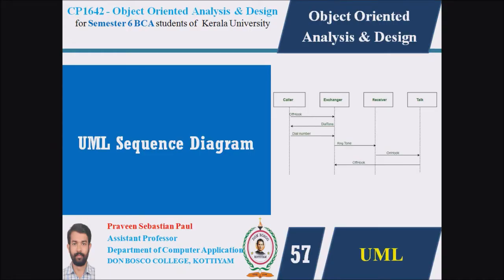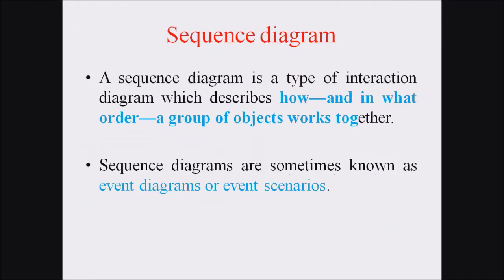Hi students, I am Praveen Sebastian Paul. In this lecture we are discussing the UML sequence diagram. A sequence diagram is a type of interaction diagram which describes how and in what order a group of objects work together. Sequence diagrams are also known as event diagrams or event scenarios.